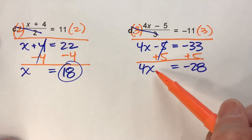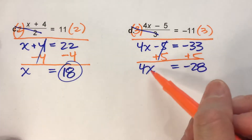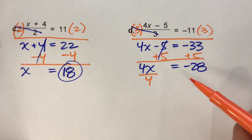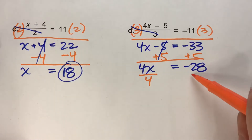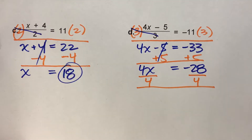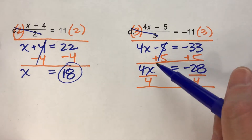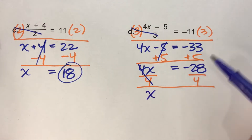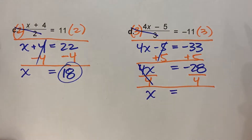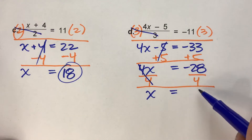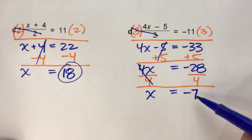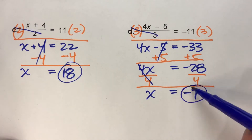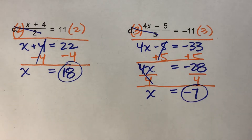Last step: we've got x times 4. We need to undo multiplying by 4, so we're going to divide by 4. What we do to one side of the equal sign, we have to do to the other side. The 4s undo each other and all that's left is x. The equal sign drops down, and negative 28 divided by 4 is negative 7. We've got the statement x equals negative 7, so x must be negative 7.